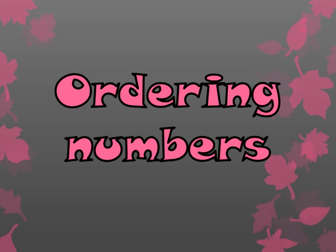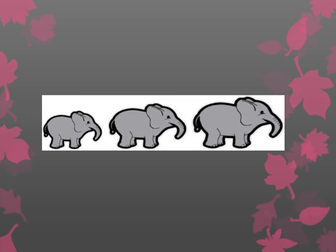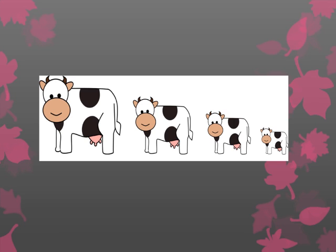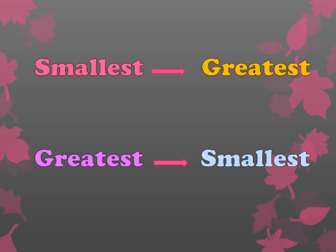Let me show you with the help of an example. Here you can see the elephants are arranged from smallest to biggest, and here the cows are arranged from biggest to smallest. In the same way we have to arrange numbers. The phrases we will use for ordering numbers are: from smallest to greatest, or from greatest to smallest.